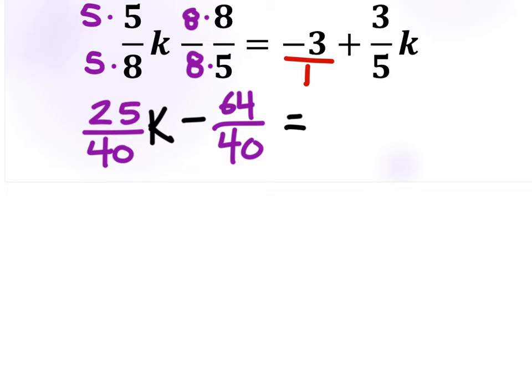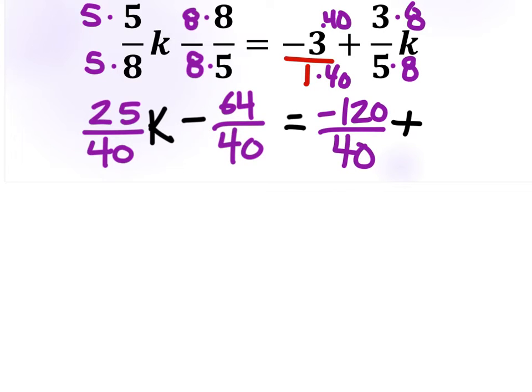Now, this equals. So the 1, we need to multiply that by 40 to make it 40. But we'll have to multiply this 3 by 40 as well. So that gives us a negative 120 divided by 40. You can check that in your calculator there. We'll add this to 5 times 8. We've already done 5. So we know to multiply it by 8 here on the 3 and 5. And that gives us 24 40ths K.